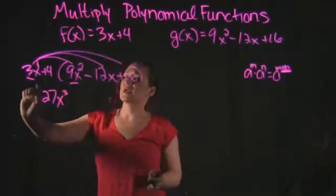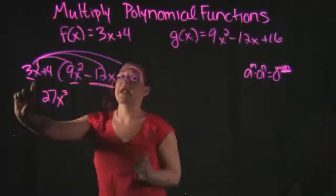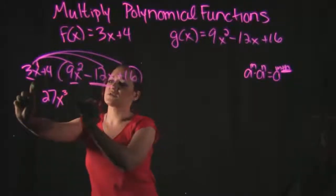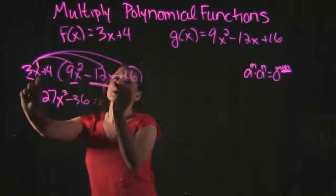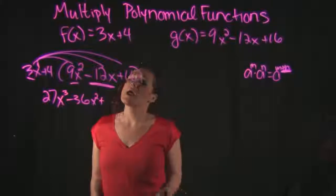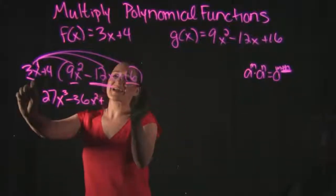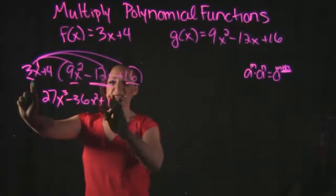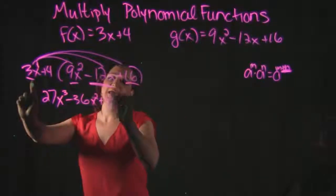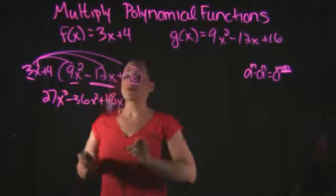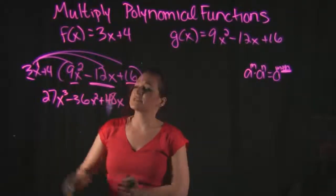Next multiplication: 3x times negative 12x — 3 times negative 12 gives us negative 36, and x times x gives us x squared, so negative 36x squared. Our next multiplication is 3x times 16 — 3 times 16 gives us 48, and we tack on the x with it, giving 48x. Now we're done multiplying everything by the 3x.